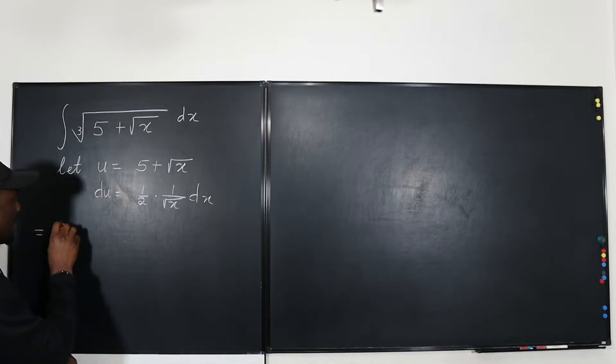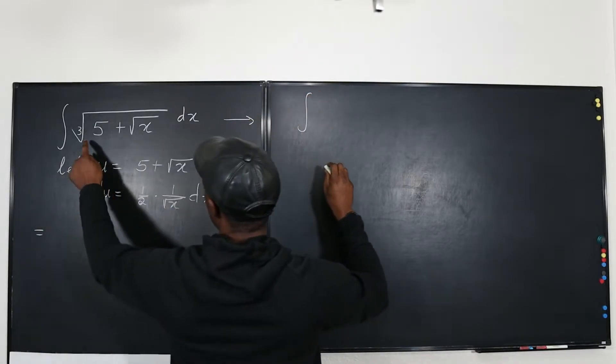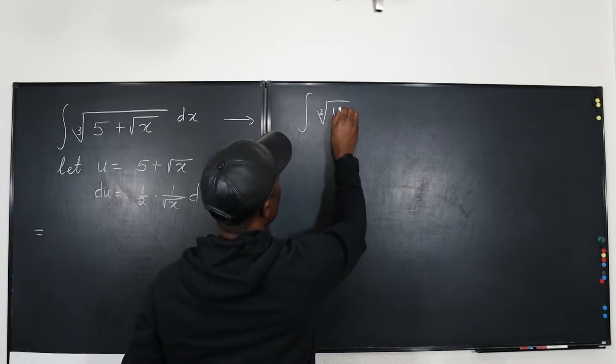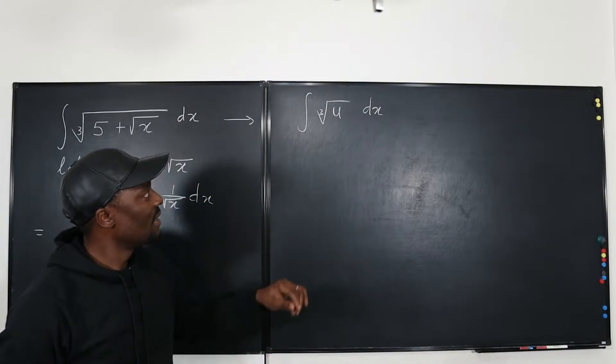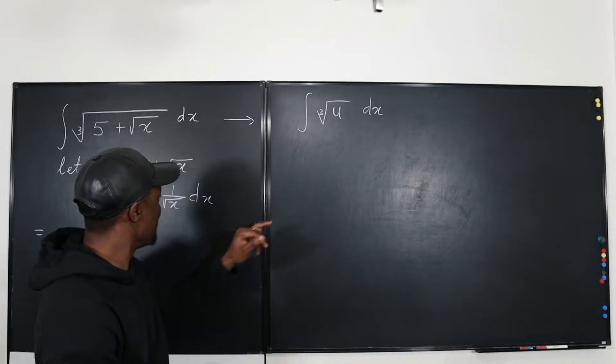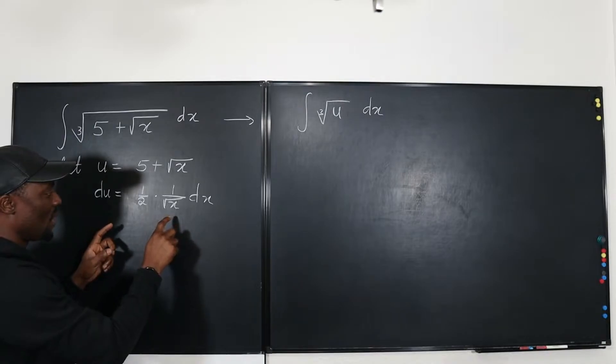Because now with this substitution we've done, what we have here is the integral of the cube root of u, dx. You see the problem is we want to replace this with du, but right now if I try to do that it doesn't work. What can I do?